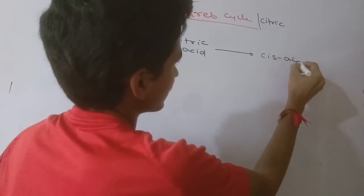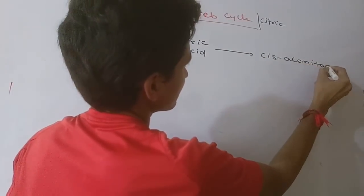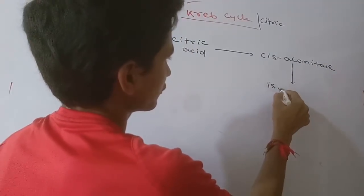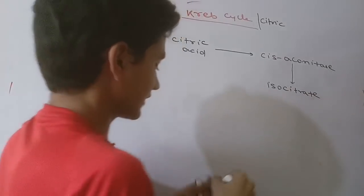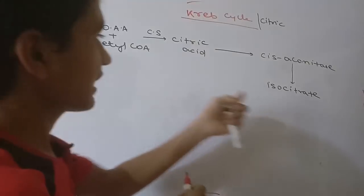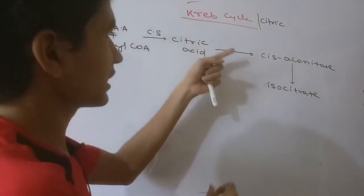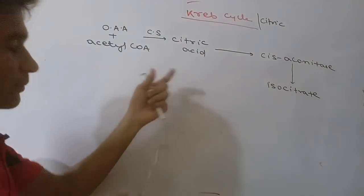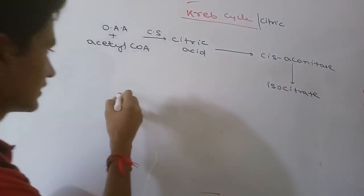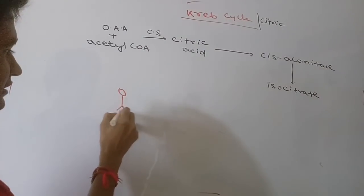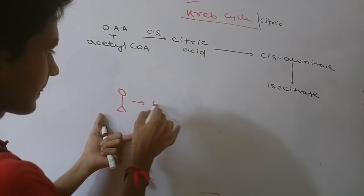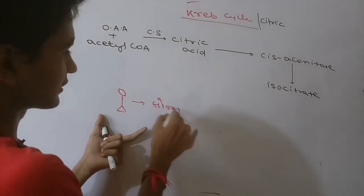Citric acid, using the enzyme aconitase, will be converted into isocitrate. The key is citric acid — look at citric acid — then isocitrate. To get through this series: citric acid to cis-aconitate to isocitrate.